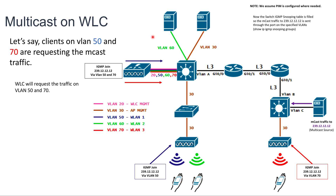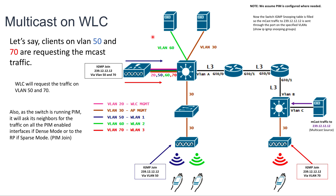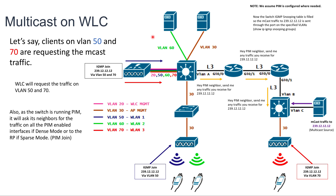Now the switch knows the controller needs to receive traffic on VLAN 50 and VLAN 70 — you can verify this with 'show ip igmp snooping groups'. Because this switch is running PIM, it will ask its PIM neighbors to send any traffic received for 239.12.12.12. At this point, the controller and switch are not receiving any traffic, because all devices in the path still don't know there is a receiver. The process repeats across all PIM neighbors — this is why you need PIM enabled on all interfaces in the path. If one link is missing PIM configuration, the message requesting the group traffic will not reach the destination and the Multicast flow will be broken.